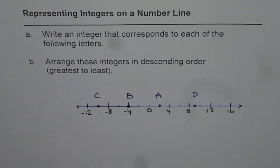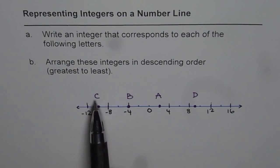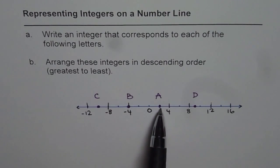Let us now try to understand how to represent integers on a number line. This example will help us to do so. We have a number line here and these are some letters which are positioned on a number line.